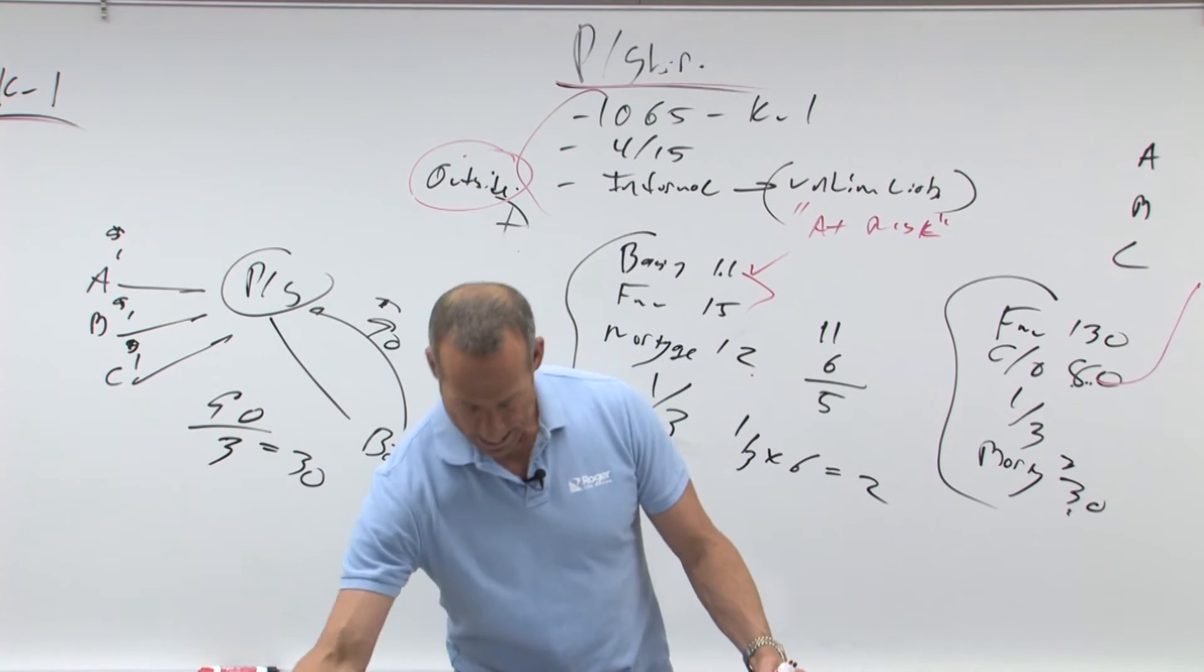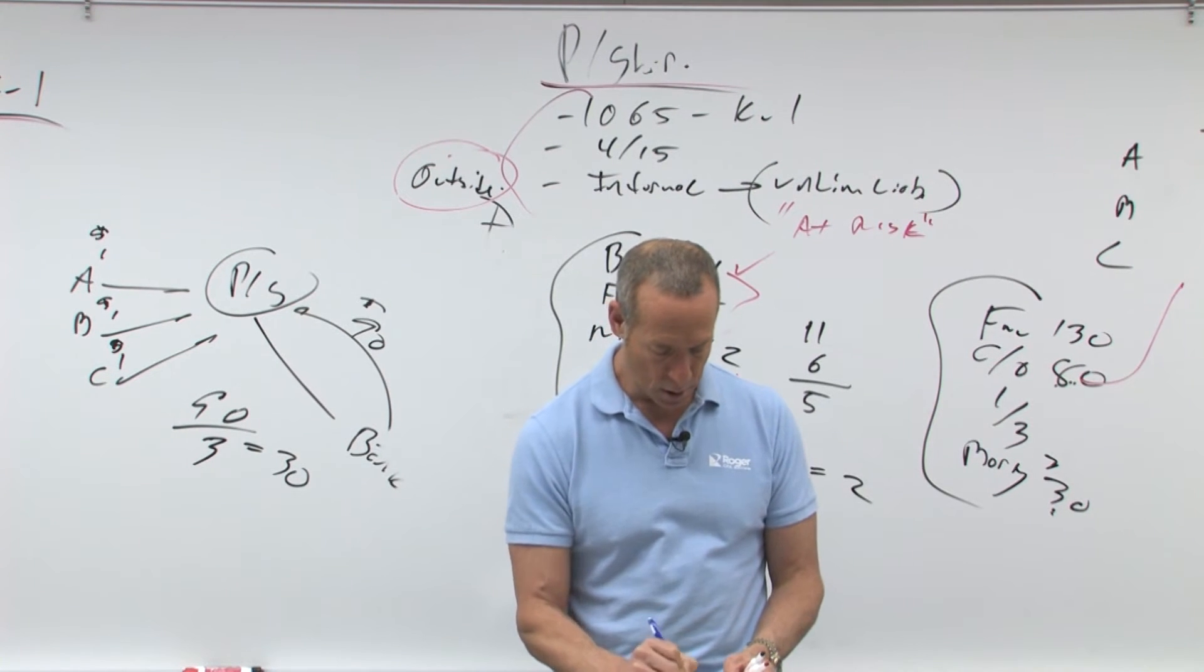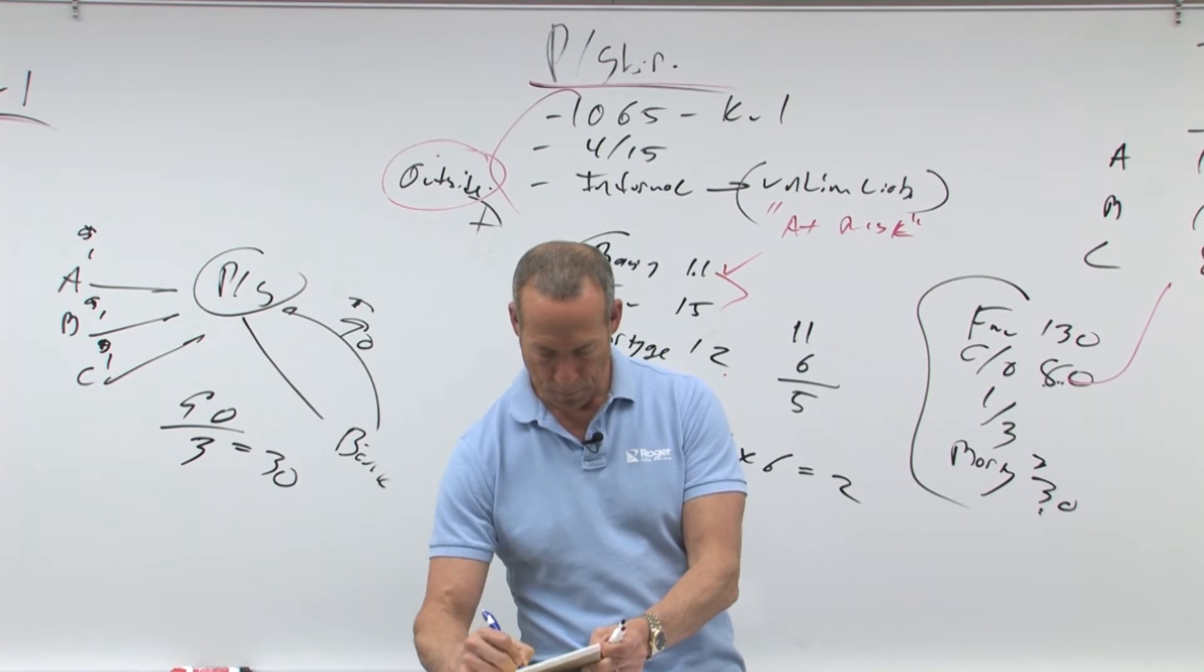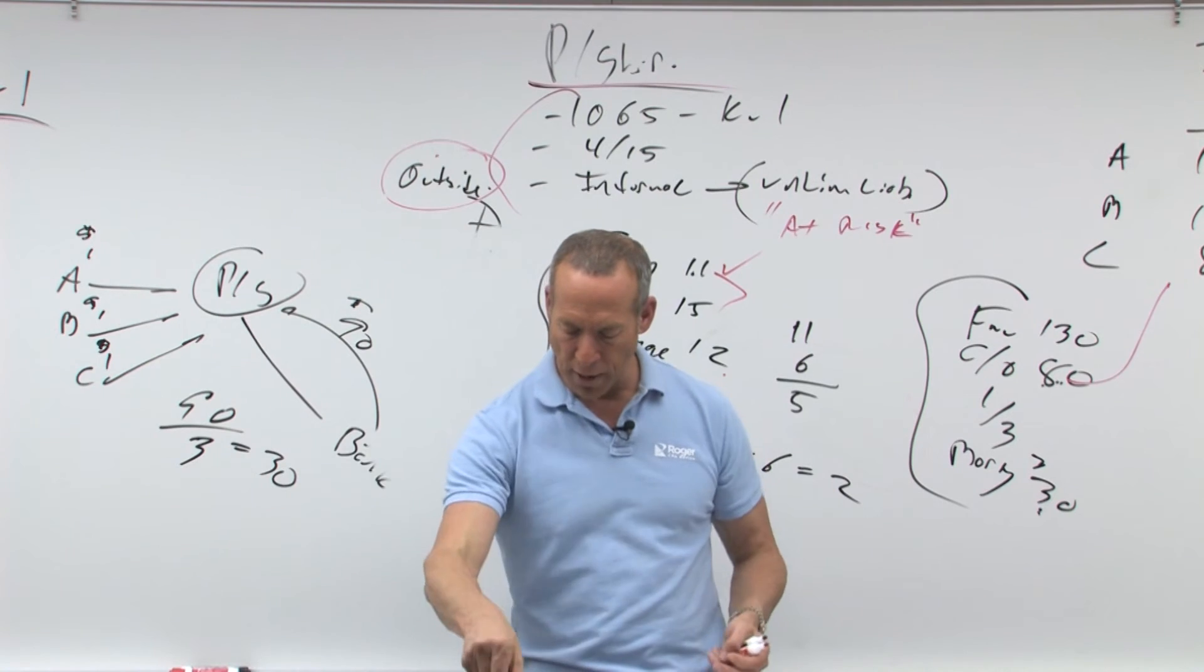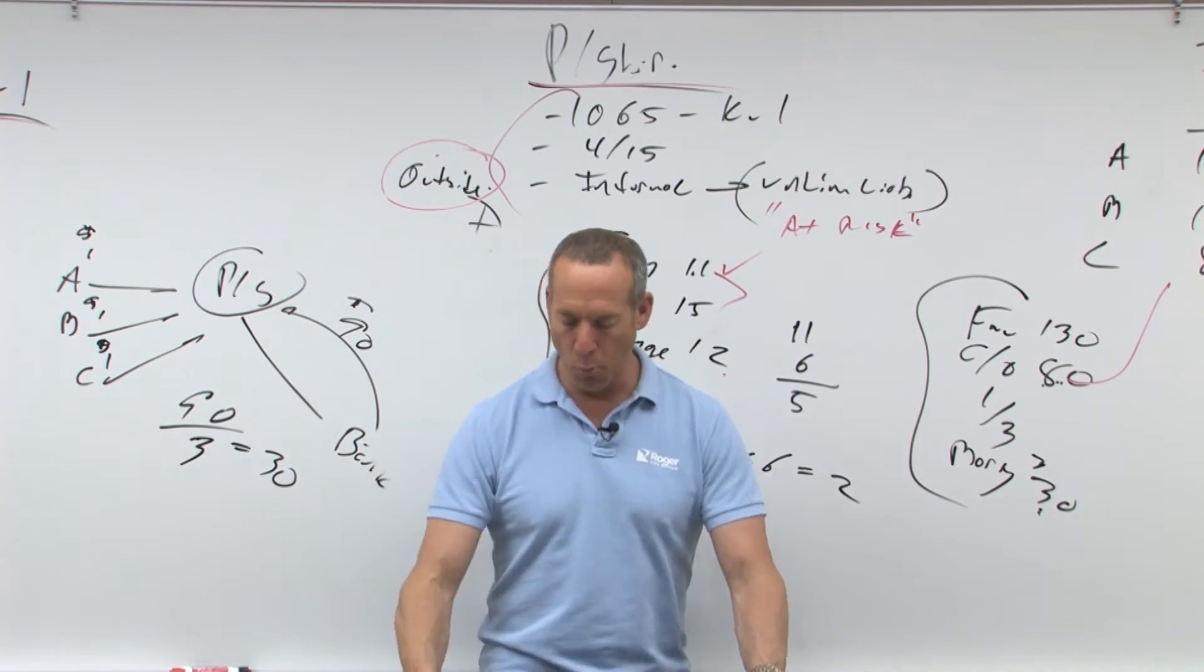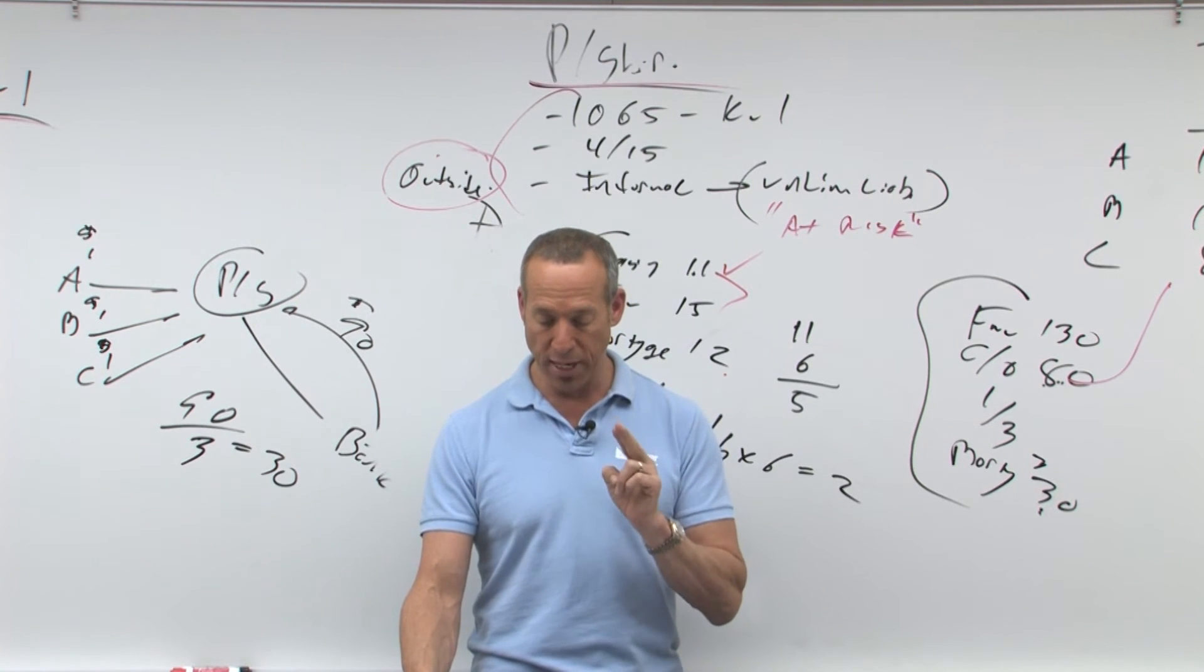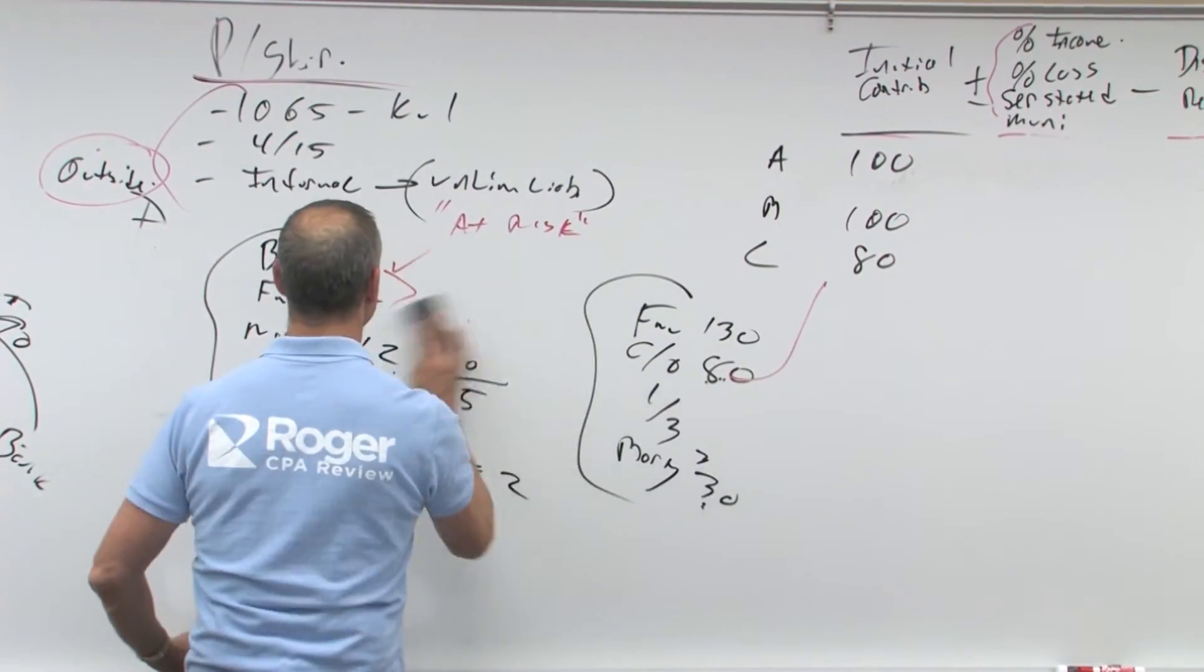Let's do this example in the notes. It says, we get a 20% interest by contributing an asset with a fair value of 10, a carryover basis of four, subject to a mortgage of six, which the partnership assumes. One more time. We get a 20% interest, contributing an asset of 10, fair value, carryover basis four, subject to a mortgage of six. So let's put these numbers on the board and see what we've got.